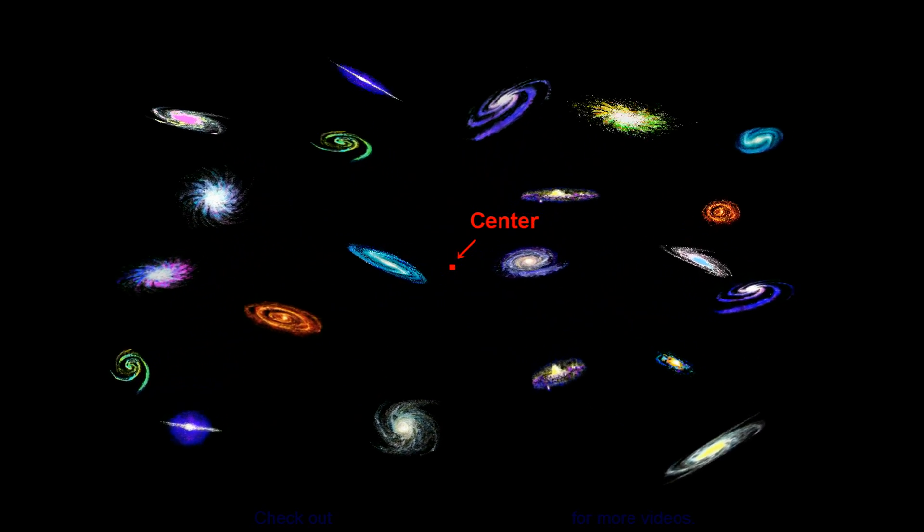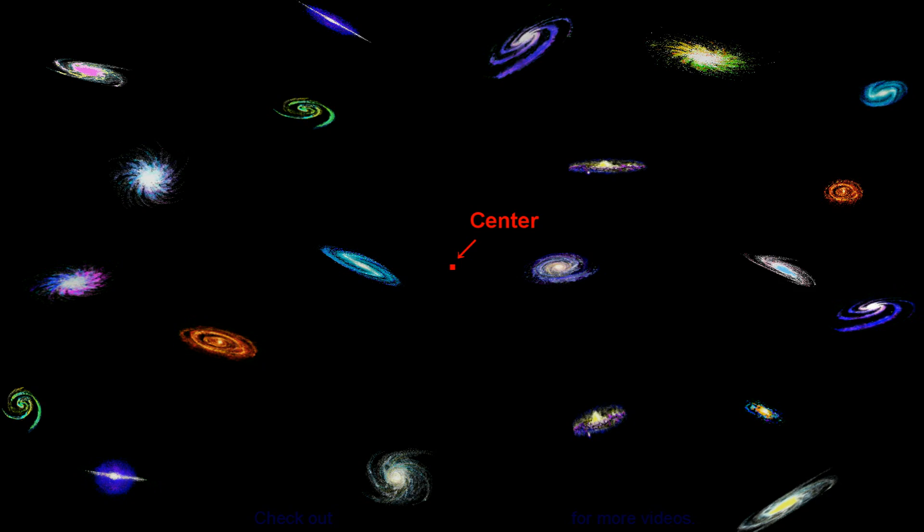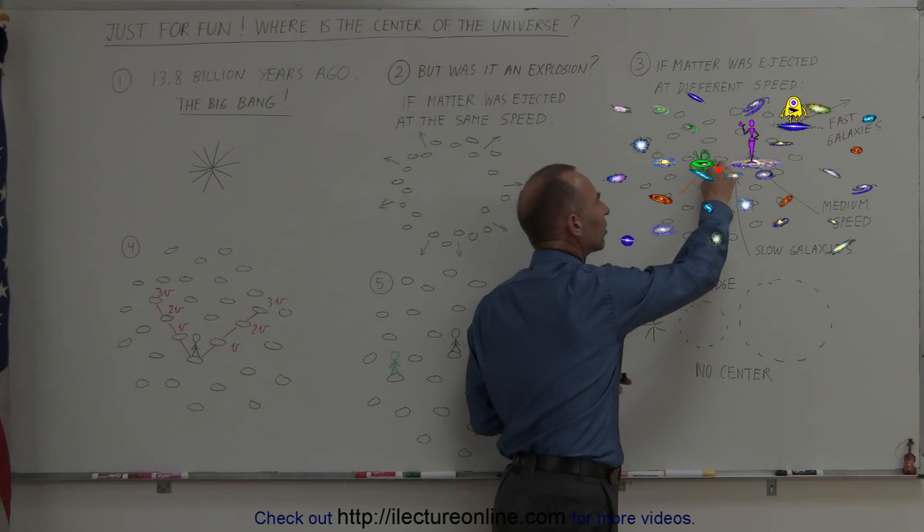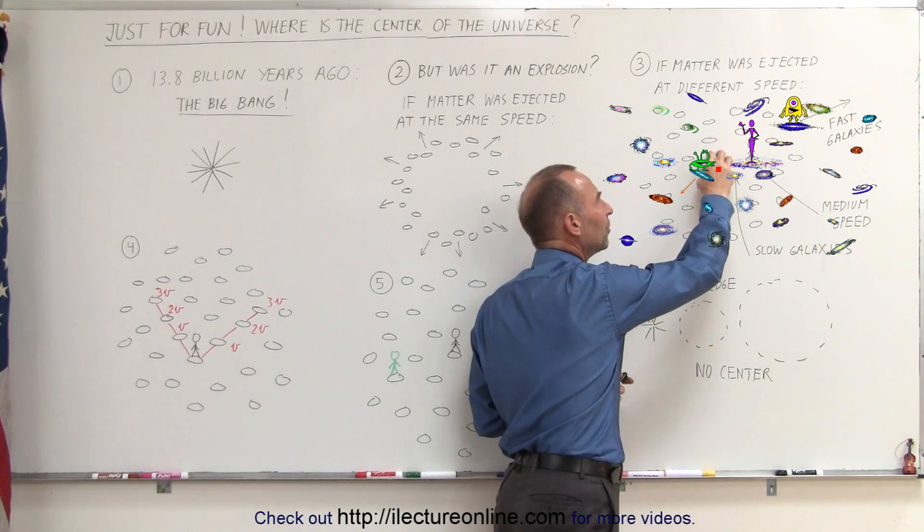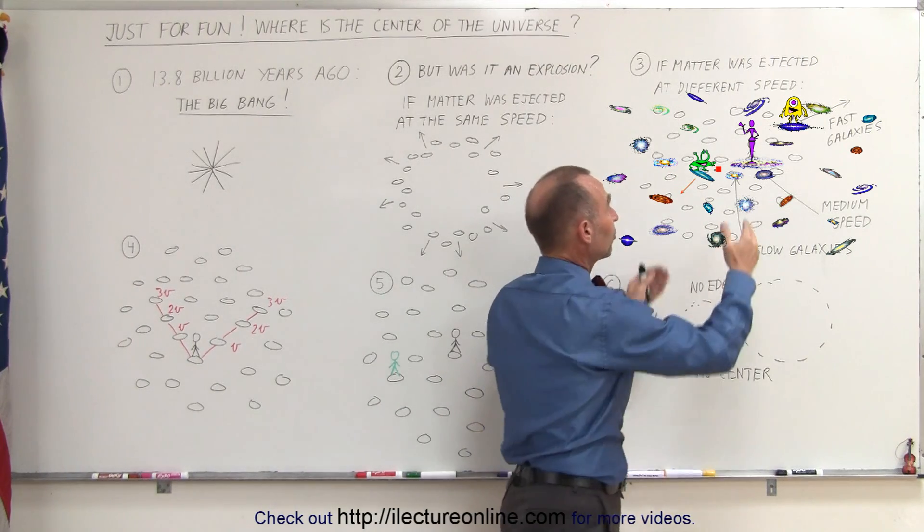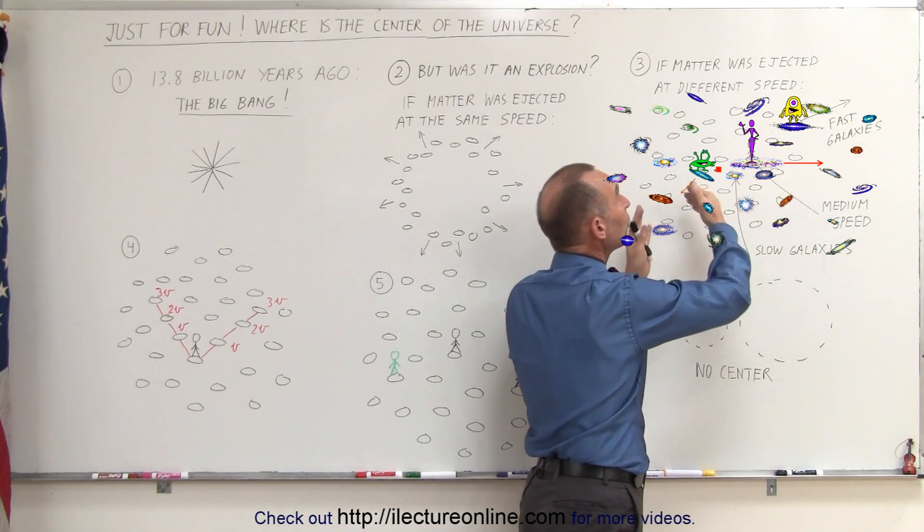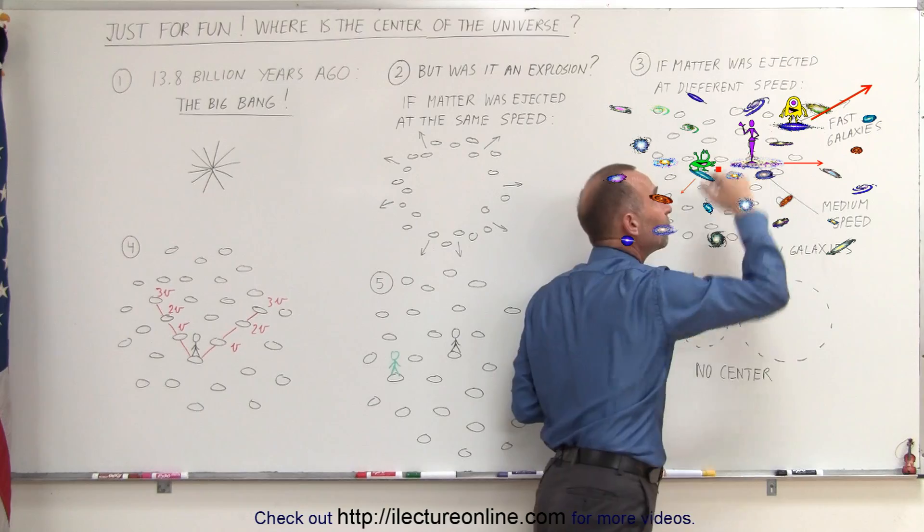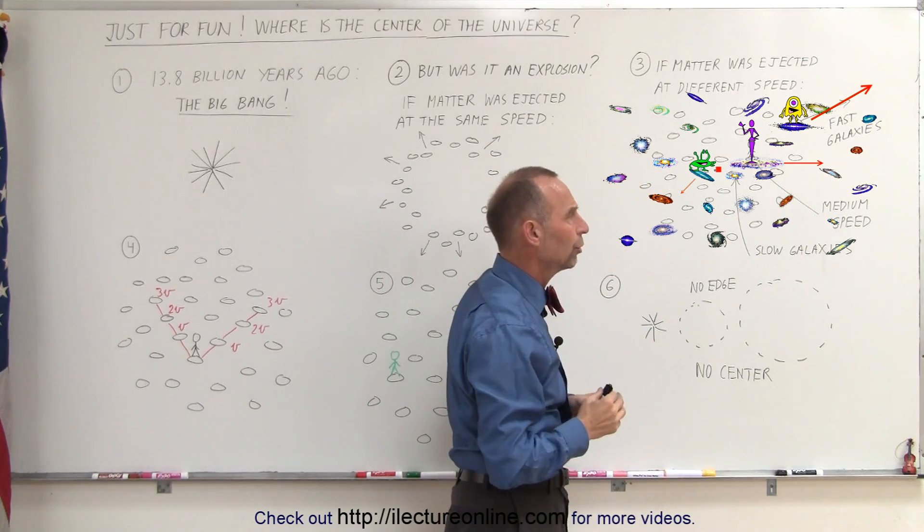Maybe it was an explosion and matter was thrown out at different speeds. If that was the case, there would be a place in the universe where galaxies would be moving very slow from the center, and there would be galaxies that were moving at medium speed, and there would be galaxies moving at very high speeds away from where the explosion occurred.